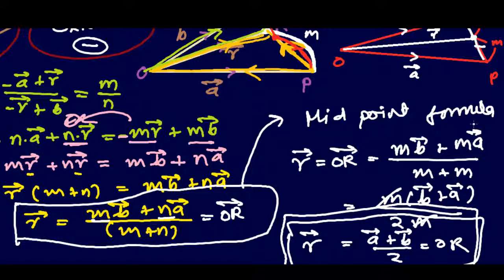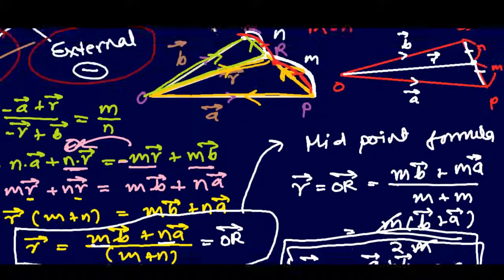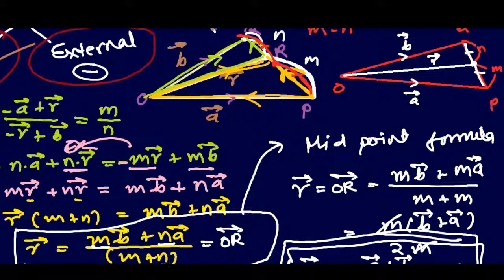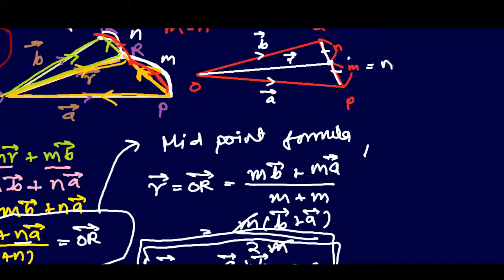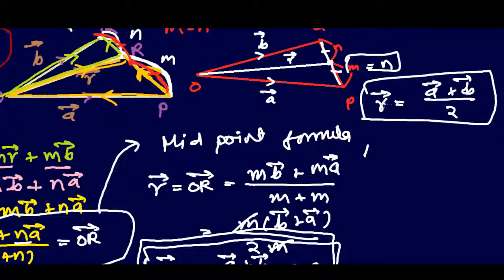This is called the midpoint formula. It's very easy. If the intersection is equal, both ratios are equal, if M equals N, then that time our midpoint formula will be vector A plus vector B divided by 2, very simple. Now, let's learn the external section.